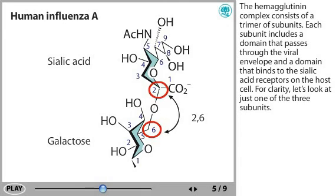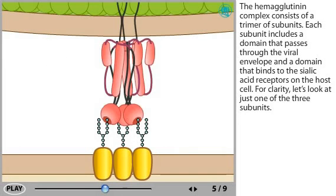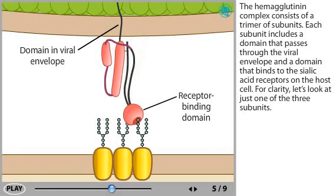The hemagglutinin complex consists of a trimer of subunits. Each subunit includes a domain that passes through the viral envelope and a domain that binds to the sialic acid receptors on the host cell. For clarity, let's look at just one of these three subunits.